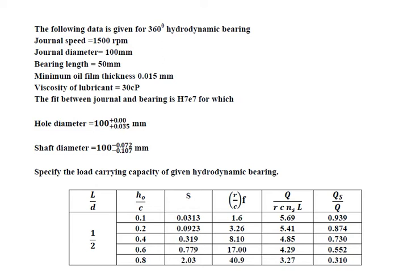For the H7/E7 fit, the hole diameter is 100 mm with upper limit +0.035 mm and lower limit +0.00 mm. The shaft diameter is 100 mm with upper limit −0.072 mm and lower limit −0.107 mm. The journal bearing diameter is 100 mm and bearing length is 50 mm, so the L by D ratio is 50 divided by 100 = 1/2.